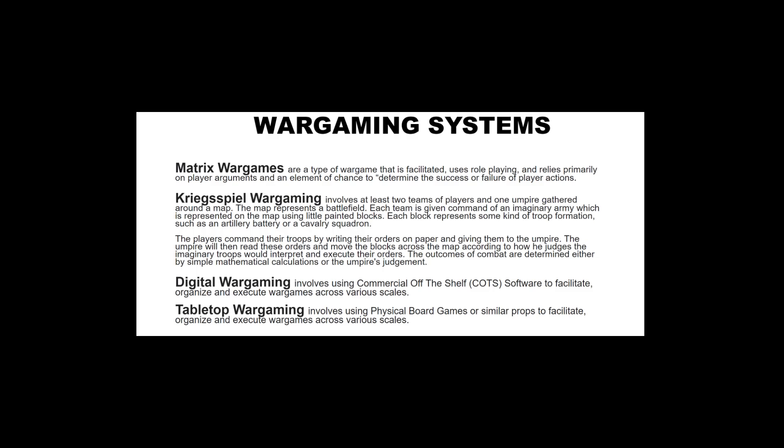In a Kriegsspiel wargame, players command their troops by writing orders on a piece of paper and giving them to the umpire. The umpire then reads the orders, moves the blocks across the map, and executes the orders based on their interpretation of the situation. Outcomes of combat are also determined by the umpire's judgment, though some Kriegsspiel systems have actual combat rules associated with them that aren't too in-depth. It involves no computers and no dice rolls from the player perspective — just looking at a map, writing your orders, and hoping the umpire is favorable.